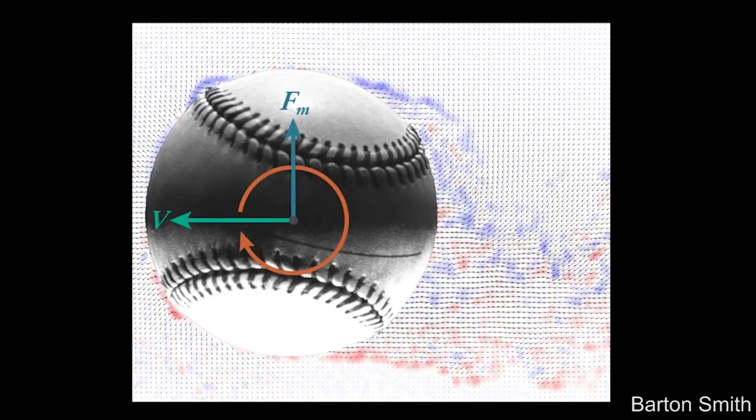What's interesting about it is as the ball flies through the air, you can have a seam on the front and a seam on the back at the same time. One on the front will cause the flow to become turbulent, and one on the back will cause the boundary layer to separate — and that can be asymmetric, and that causes forces on the ball.